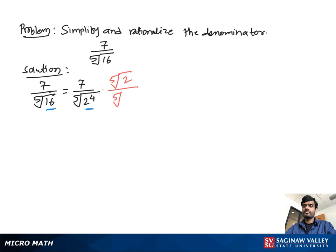We multiply both numerator and denominator by 5th root of 2. Then we get 7 times 5th root of 2 over 5th root of 2 to the 4th times 2 to the 1st.